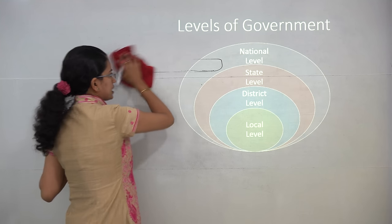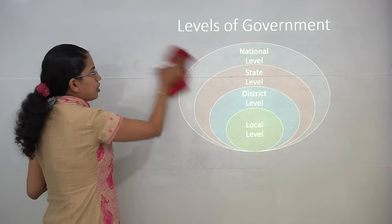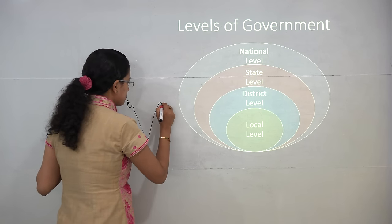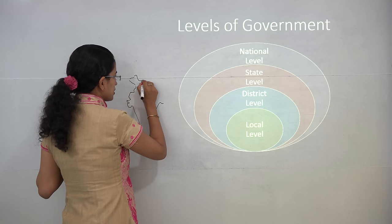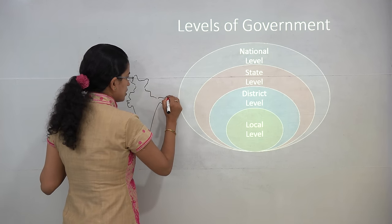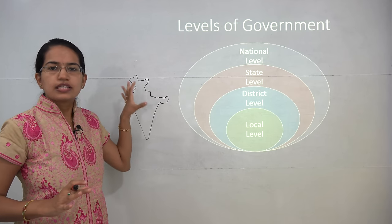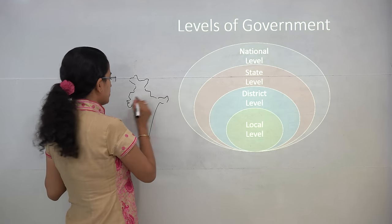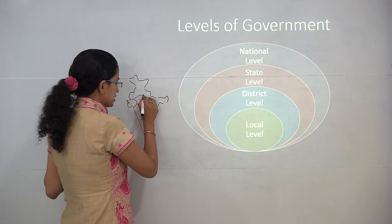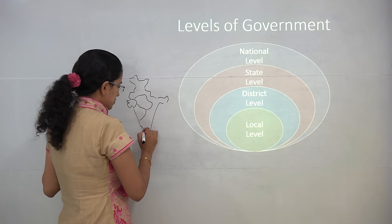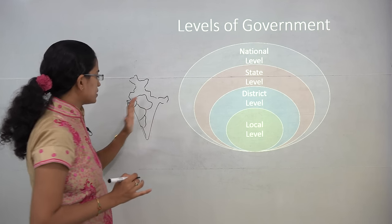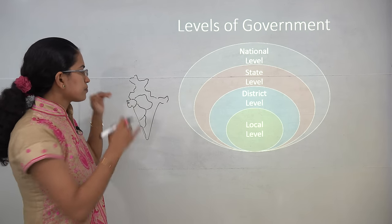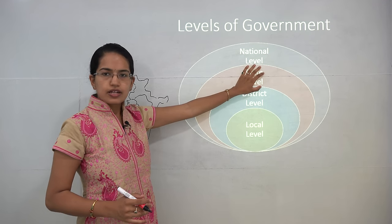There are various levels of government that we will try to understand. If we look at India as one country, what is important is a good national government. You have a national level government that looks after the entire country. Then you have the state level government — the various states. For example, Gujarat, Madhya Pradesh, Maharashtra, Karnataka, and Kerala. These are looked after by the state level government.